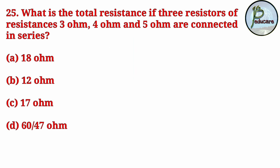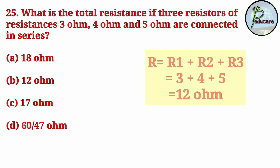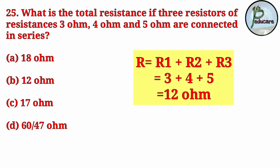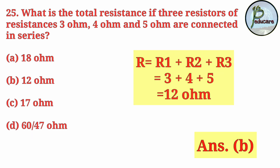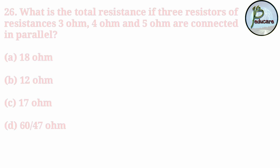Next question: What is the total resistance if 3 resistors of 3 ohm, 4 ohm, and 5 ohm are connected in series? Using the formula R = R1 + R2 + R3, the values give us 3 + 4 + 5 = 12 ohm. The correct answer is B, 12 ohm.